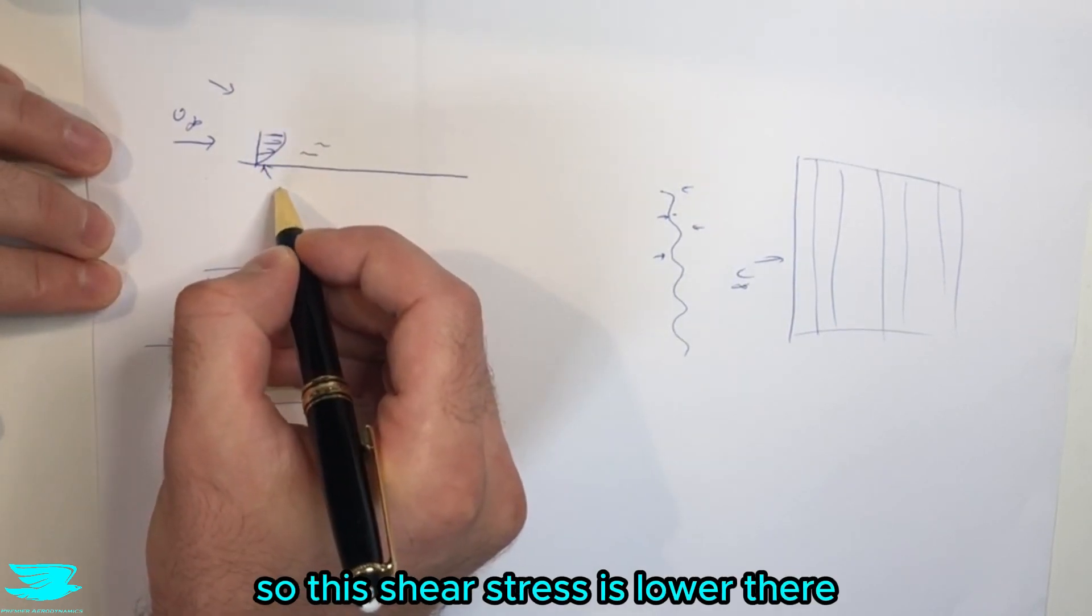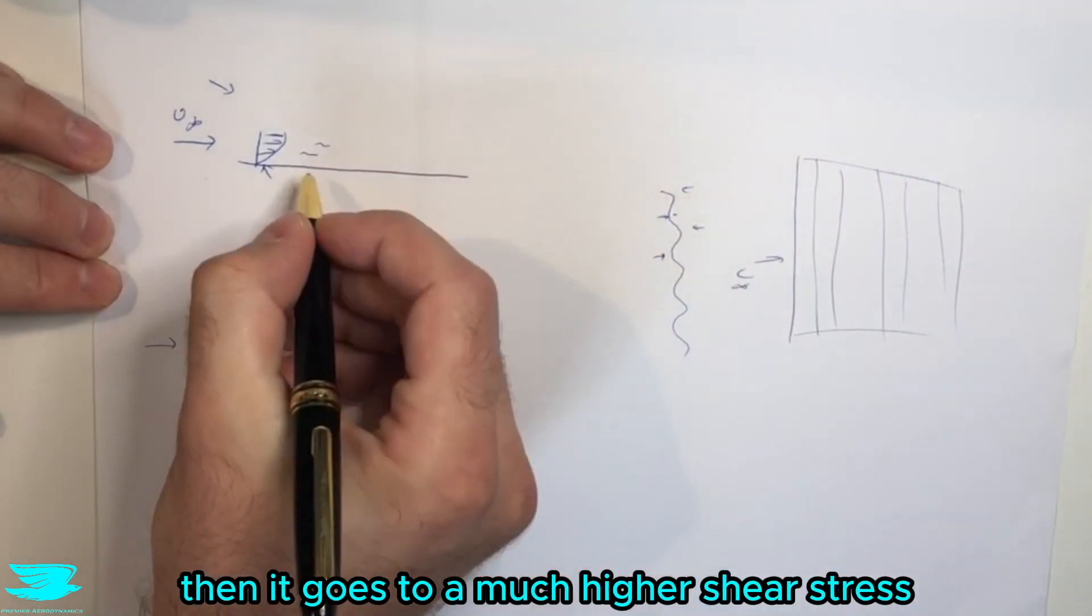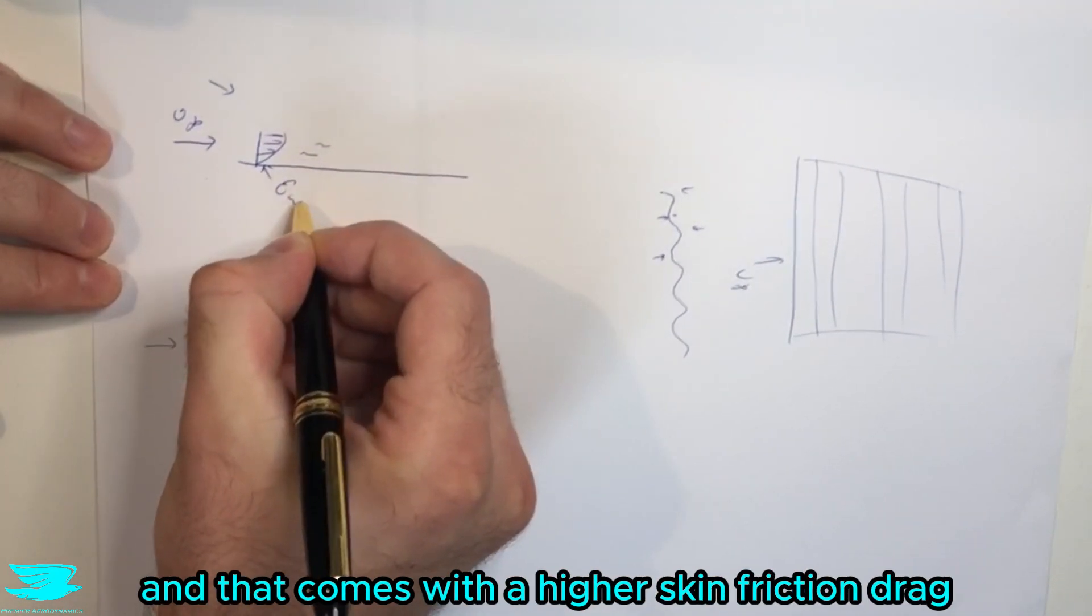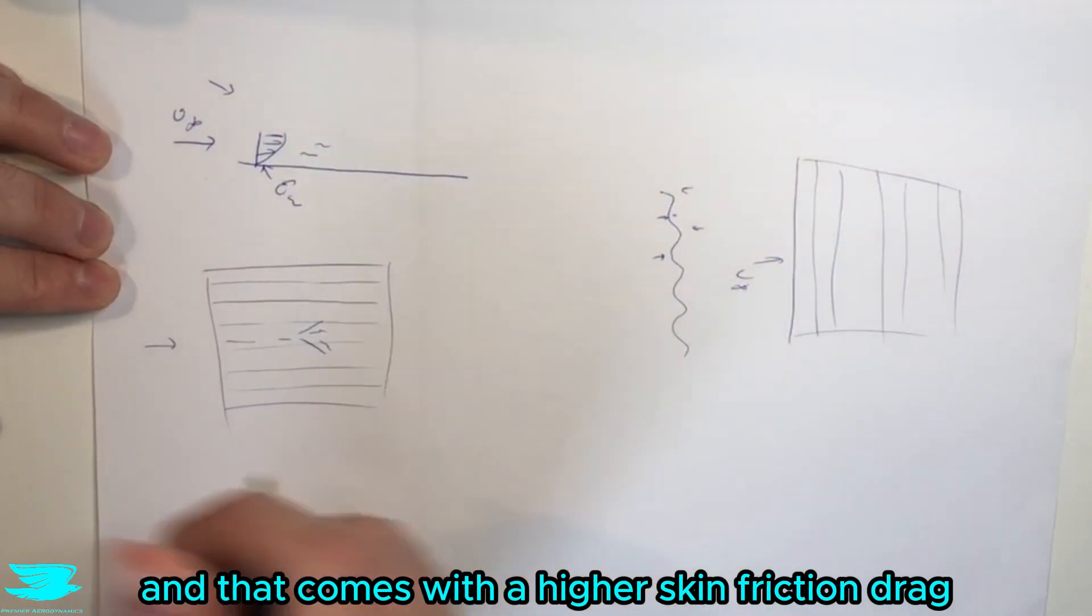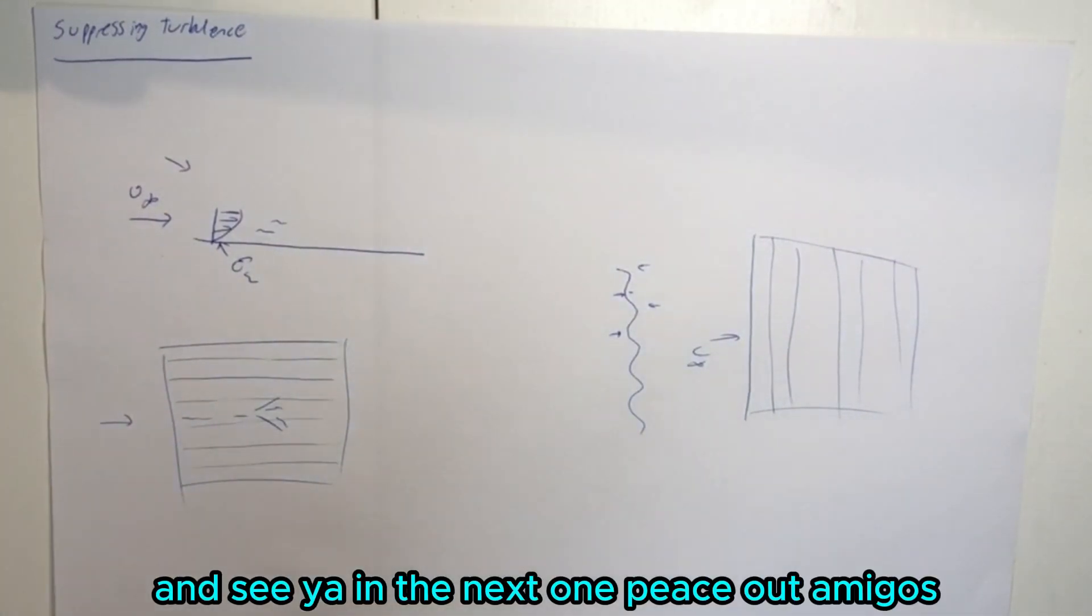near the wall so the shear stress is lower there. And if you were to trip it, then it goes to a much higher shear stress and that comes with a higher skin friction drag. So that is it for this video. If you'd like, make sure to like and click the subscribe button and we'll see you soon. Peace amigos!